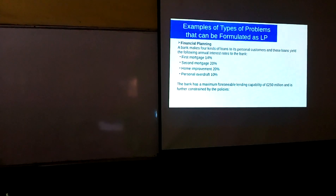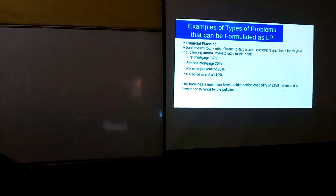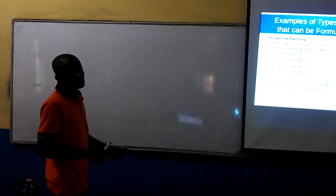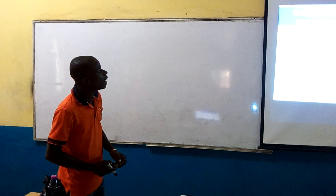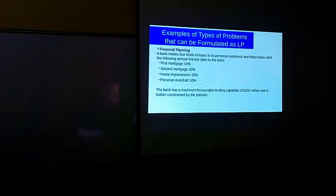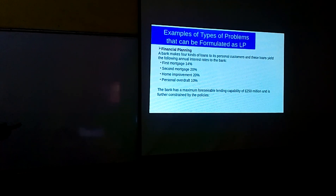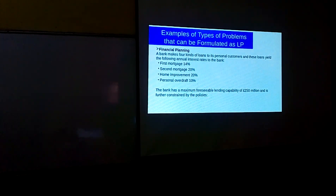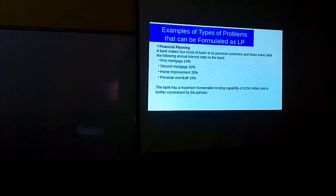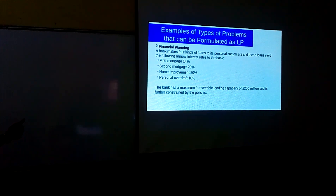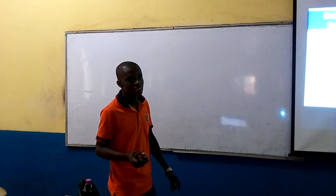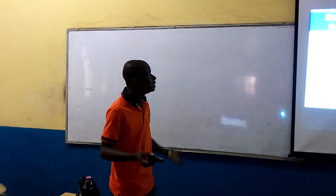This is a financial planning problem. A bank gives four types of loans: first mortgage, second mortgage, home improvement loans, and personal overdraft. These loans yield the following interest rates: first mortgage is 14%, second mortgage is 20%, home improvement is 20%, and personal overdraft is 10%. What the bank wants to achieve is to maximize profit.